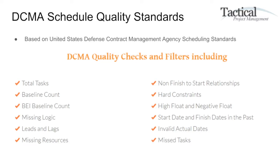All this is based on the United States Defense Contract Management Agency scheduling standards, also known as the DCMA. These quality checks and filters include counts for total tasks, the baseline count, the BEI baseline count, missing logic, leads, lags, missing resources, non-finish-to-start relationships, hard constraints, high float and negative float, start dates and finish dates that are in the past, as well as invalid actual dates and missed tasks. It's important to compare your project schedule to quality standards so you can evaluate the overall health of the project schedule.